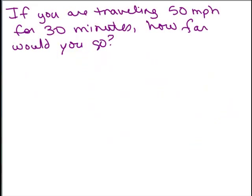In part one, we said if we've got the rate in miles per hour, I need to be consistent that my time has to also be in hours. So this is a little bit different. It says, if you are traveling 50 miles per hour for 30 minutes, how far have you gone?